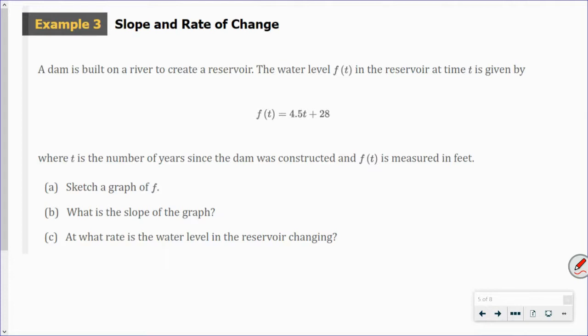So, a dam is built on a river to create a reservoir. The water level f of t in the reservoir at a time is given by this function. Where t is the number of years since the dam was constructed. And f of t is measured in feet. So, sketch a graph. Okay. So, we have this graph. I'm going to go by tens. We'll go by tens in the y direction. But we can go by ones in the x direction. If you do that, make sure you label so we can tell. Okay, so we start at 28. So, 10, 20, 28 here.